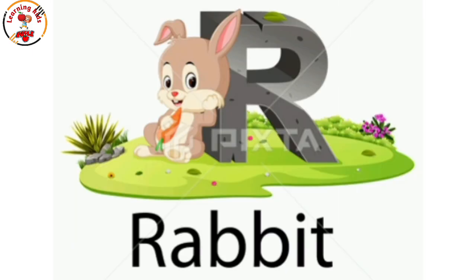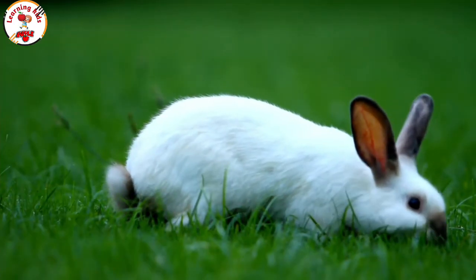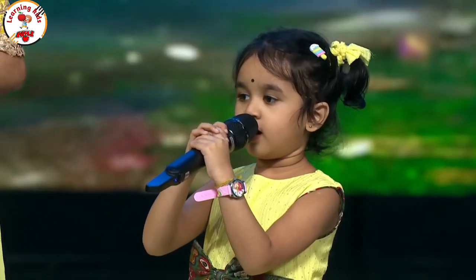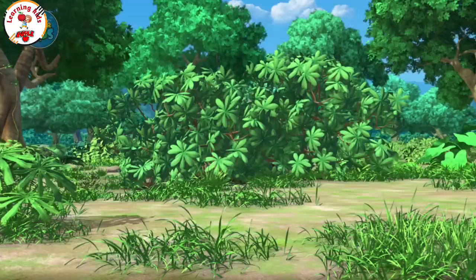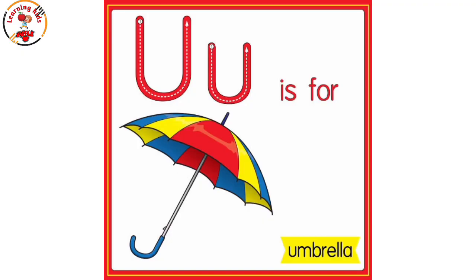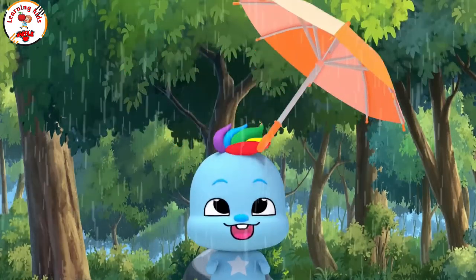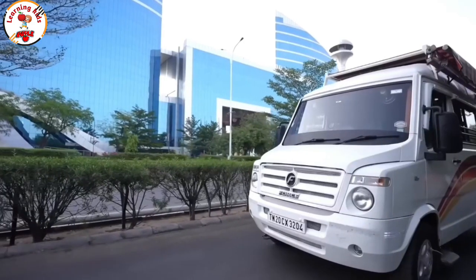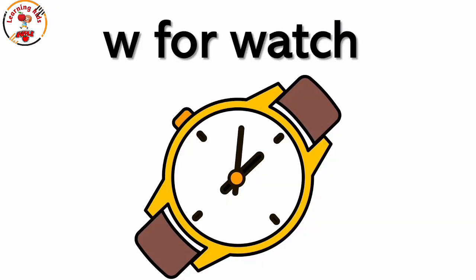R for rabbit. T for tiger. V for van. W for watch.